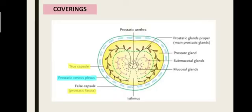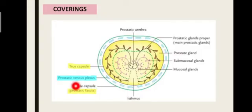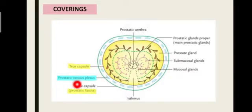Next are the coverings of the prostate gland. The prostate gland is covered by two capsules: the outer false capsule and the inner true capsule. Looking at this cross-section diagram, the yellow region is your prostate and the outer layer is your capsules. The inner true capsule is a part of the prostate gland itself, and the outer false capsule is derived from the prostatic fascia, also called the pelvic fascia. Between these two capsules lies your prostatic venous plexus that drains blood from your prostate gland.